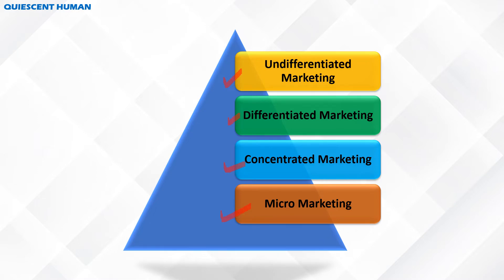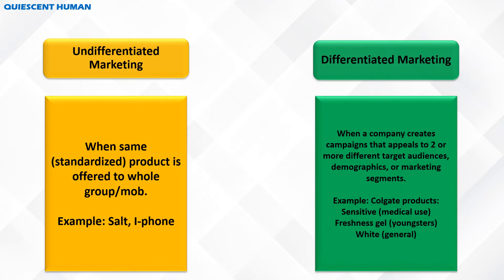Let's understand them individually. Undifferentiated marketing means mass marketing — it is a segmentation in which you do not offer different products. You have just one product and offer it to all audiences, like salt or the iPhone. Whether you buy an iPhone in India, USA, Saudi Arabia, or any other country, it will be the same because it is a standardized product offered to everyone without any customization or personalization.